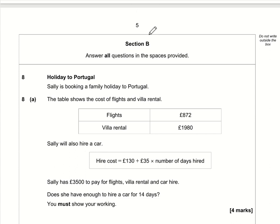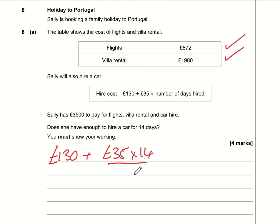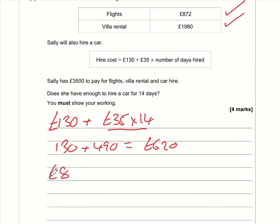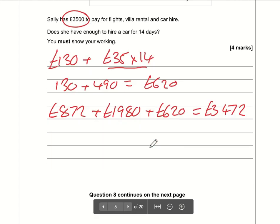Question 8: holiday to Portugal. We need the total cost. Car hire is £130 plus £35 times the number of days, which is 14. Doing the multiplication first: 35 × 14 = 490, so car hire is £130 + £490 = £620. The total is £872 (flights) + £1980 (villa) + £620 (car hire) = £3472. She has £3500, so yes, she has enough.